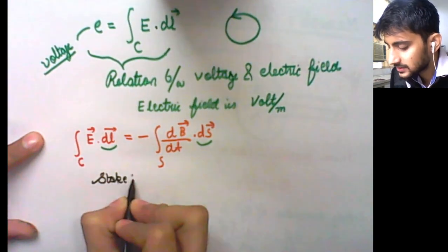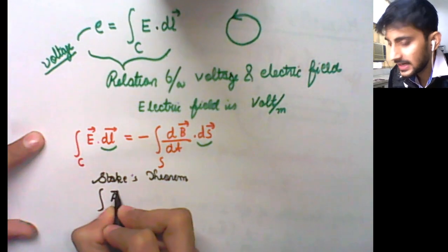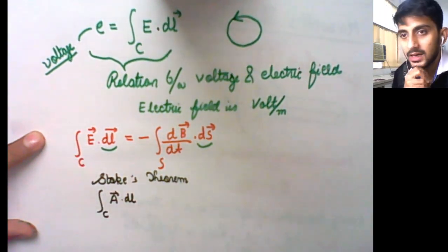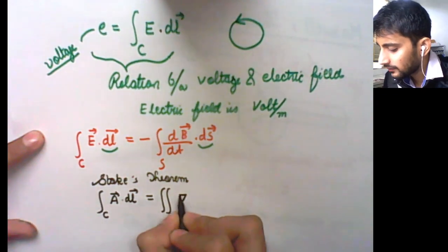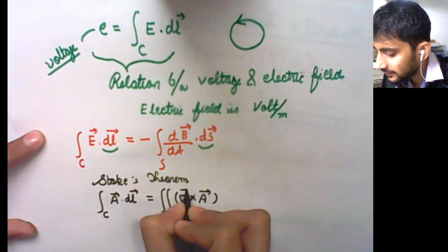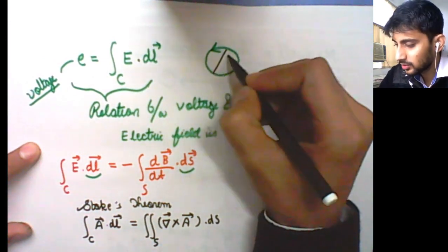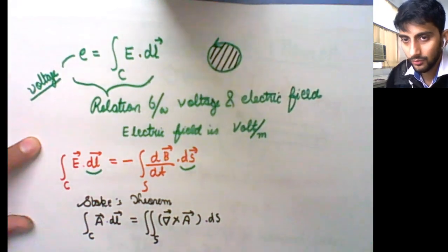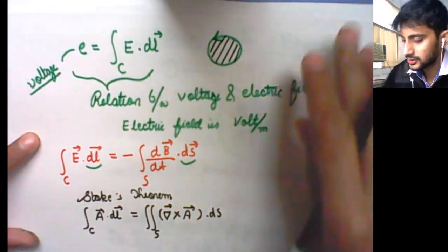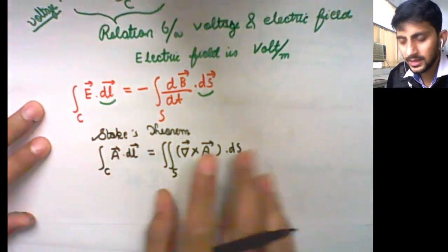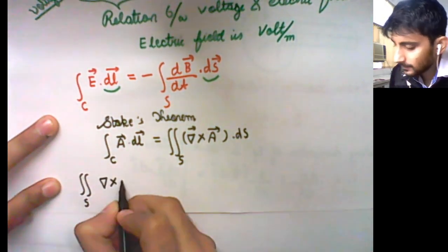From Stokes' theorem, for any vector quantity, the line integral across a closed curve equals the surface integral of the curl of that vector quantity across the open surface bounded by that curve. Applying this to E·dl, the surface integral of curl of E (∇×E·dS) equals minus the surface integral of ∂B/∂t·dS.